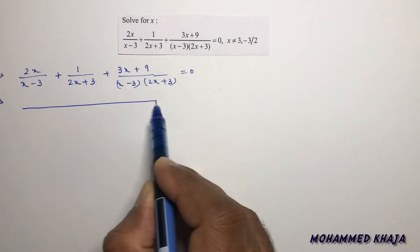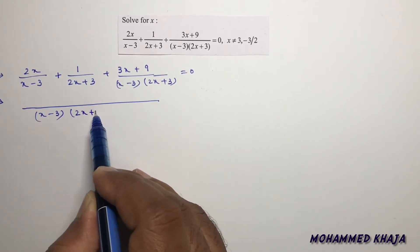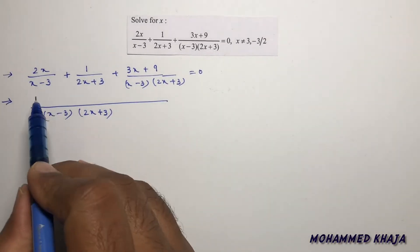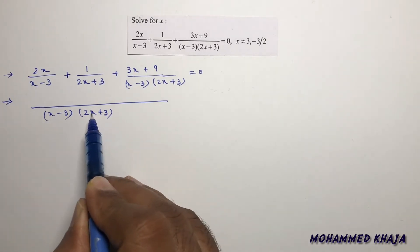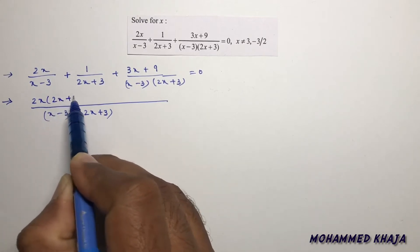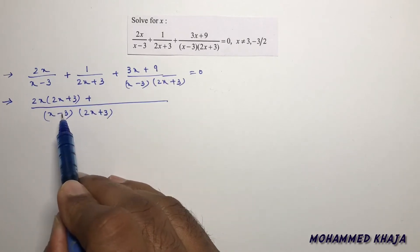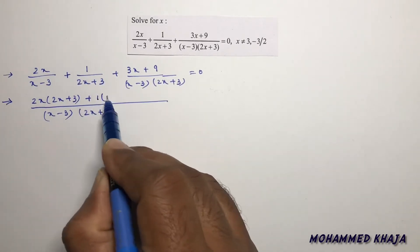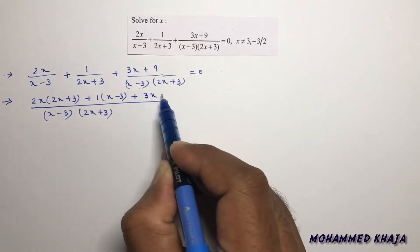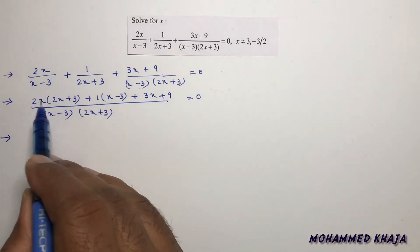In these three terms, I'll take the LCM as (x-3)(2x+3). For the first term, we have (x-3) in the denominator, so multiply 2x by (2x+3). For the second term, we have (2x+3), so multiply 1 by (x-3). The third term already has both factors, so write 3x+9 as it is. The whole numerator equals 0.